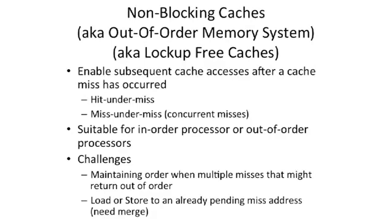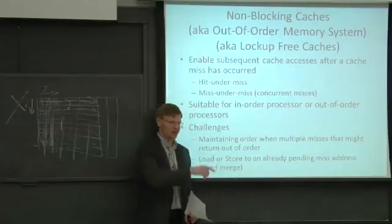A couple of big challenges here. If you have multiple out-of-order misses, the memory system is going to return data out of order. You have to deal with this somehow. It's possible you might end up in a different memory bank, and the data comes back in a different order than you sent it out. You sent out a cache miss for X, Y, and Z, and they come back in Z, Y, and X order. You need to make sure you're delivering the right data to the right location in the cache and to the right instruction.